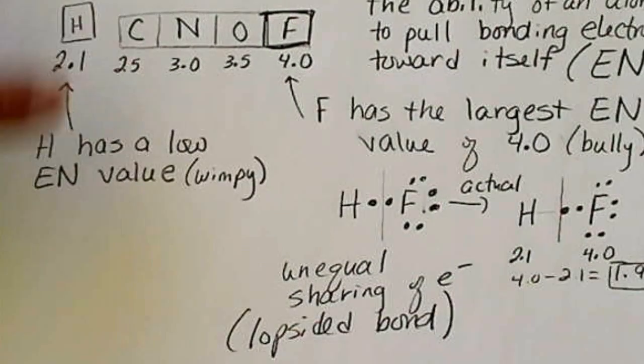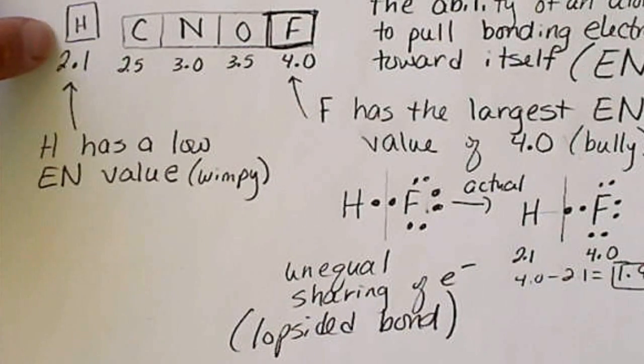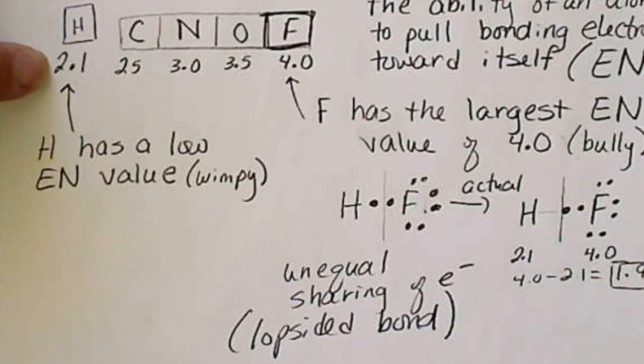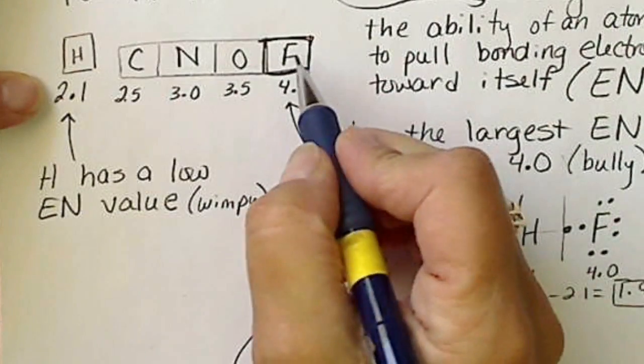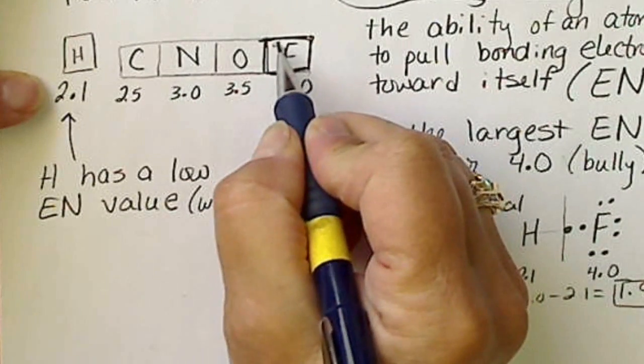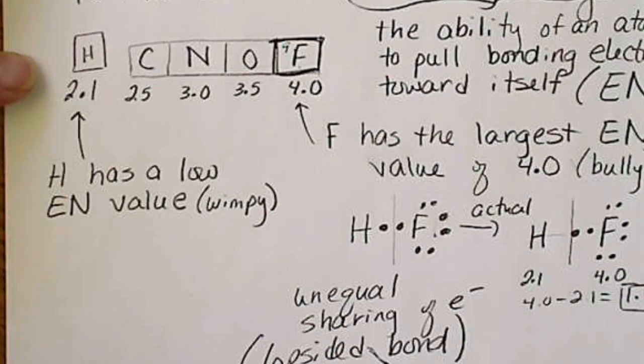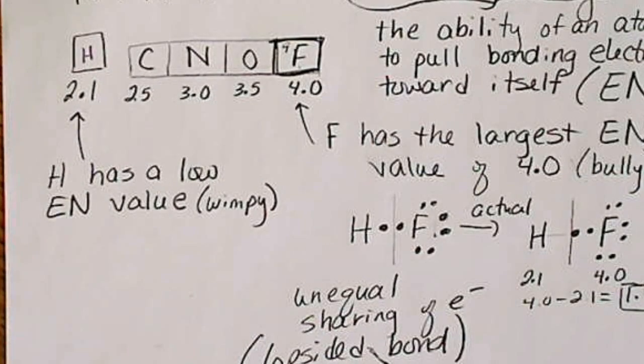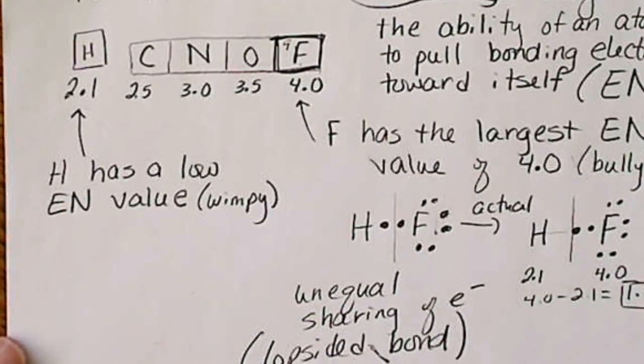And I've written here that hydrogen's wimpy. Hydrogen only has one proton in the nucleus, so it can't hold on to its electron very well, as opposed to fluorine, which is element number nine. It's got nine protons in the nucleus. So it tends to have a better ability to pull electrons toward itself.